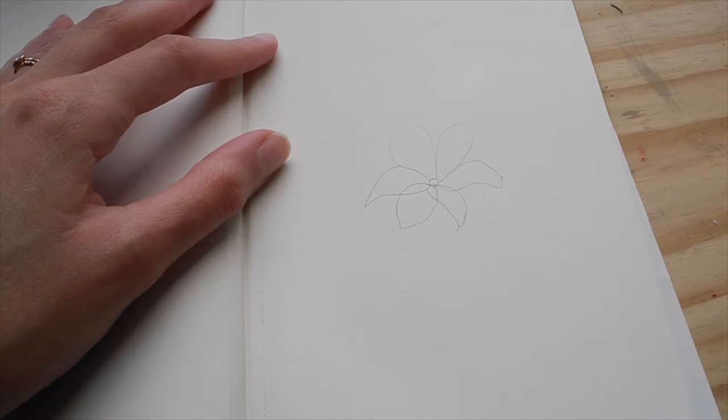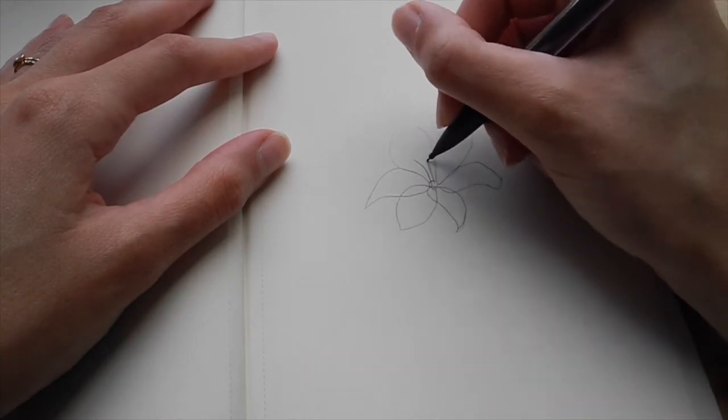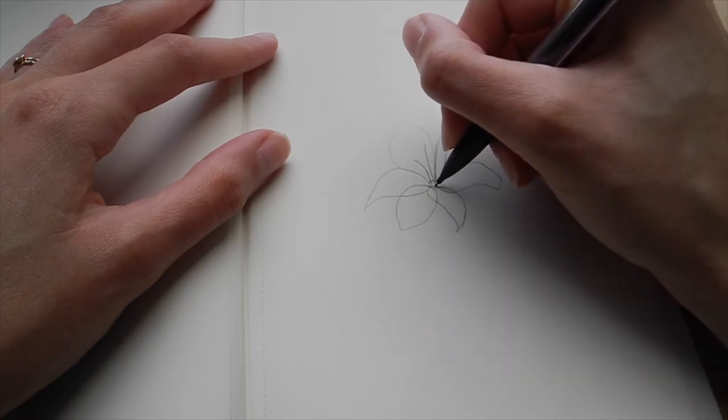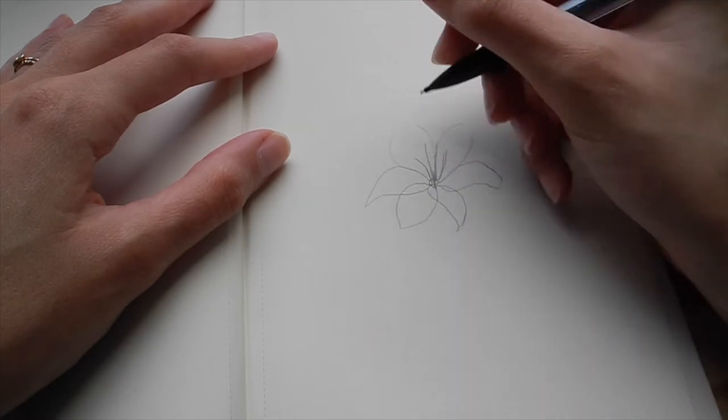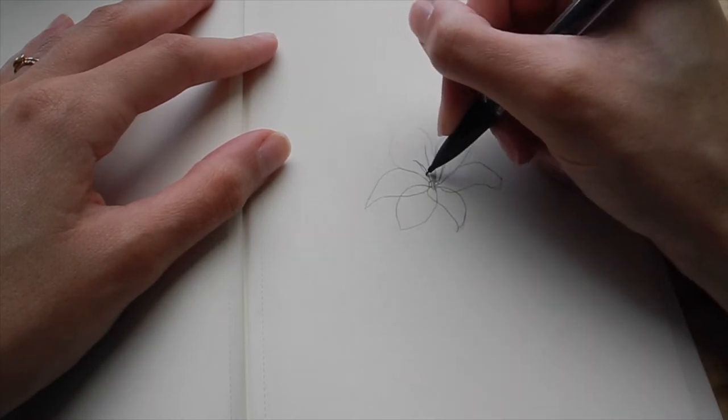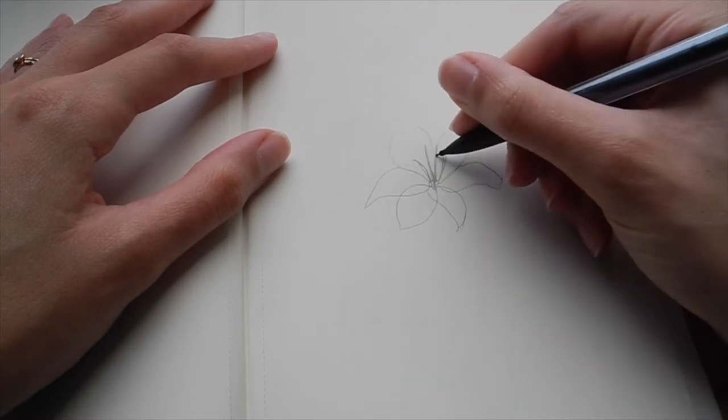And so it really helps you decide which parts of the flower you want in the front. Another thing about tiger lilies are that they have six stamen in the middle. Those just grow straight from that circle that I drew at the beginning. So that circle is not really going to show up at the end. It's just going to be the stamen.